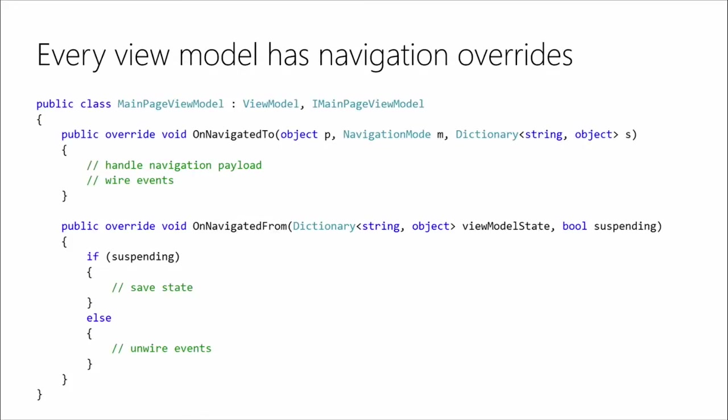Passing navigation payloads is one of the most common developer challenges, and it's solved by Prism. Every view model has navigation overrides. Here's OnNavigatedTo — this is where you use the object parameter. It's not strongly typed so you'll have to cast it. When you pass navigation payloads, it's going to be a string — always pass a string. You might be tempted to pass an object, but when you look at how you serialize navigation state during suspension, that just doesn't work properly. Then we also have OnNavigatedFrom. This is your opportunity to save state if it's suspending — it includes a Boolean for whether or not it's suspending. You can unwire events if you need to, release dependencies, or save the state out.